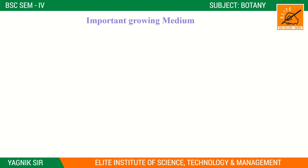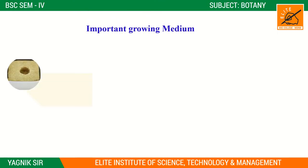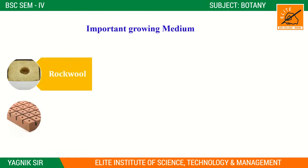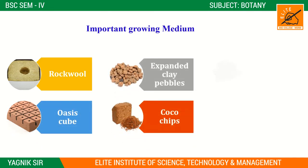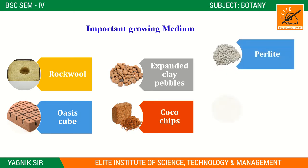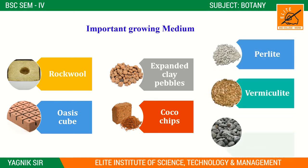So first of all, which types of growing mediums can we use? Rock wool, oasis cubes, clay pebbles, coco chips, perlite, vermiculite, and lava rocks. In most cases, all these growing mediums are very important for hydroponics.